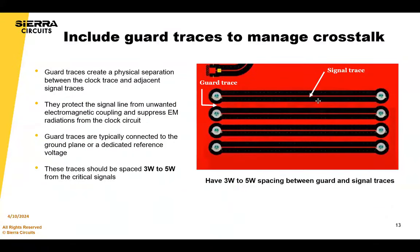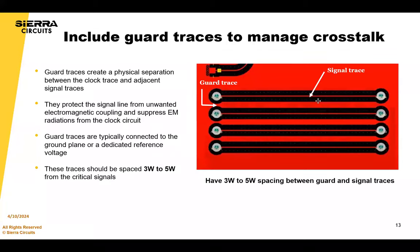Another technique is guard traces, which create a physical separation between the clock and adjacent signal traces on a PCB. They protect the signal line from unwanted electromagnetic coupling, ensuring signal integrity and minimizing the risk of crosstalk. Guard traces suppress radiated electromagnetic emissions by providing a barrier between the clock circuit and surrounding traces, reducing the system's potential for EMI. They're typically connected to the ground plane or a dedicated reference voltage, and should be spaced between 3W to 5W from critical signals. Also make sure you follow manufacturing guidelines based on your copper weights.